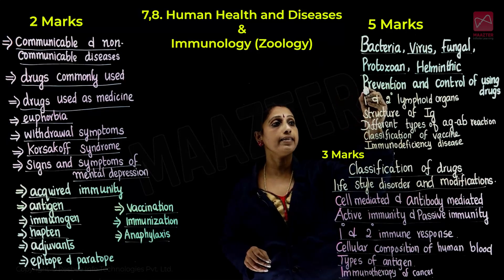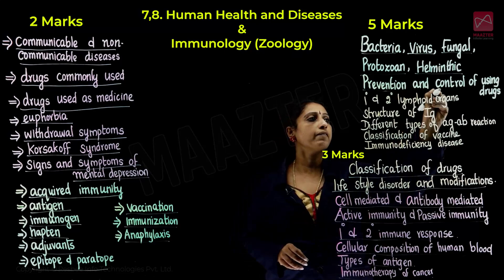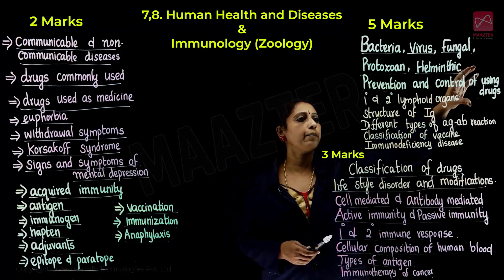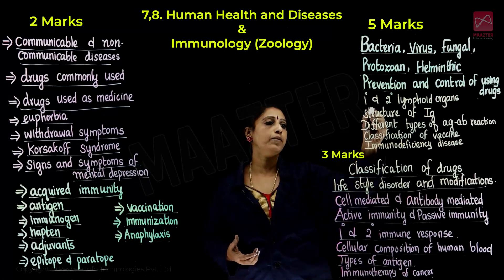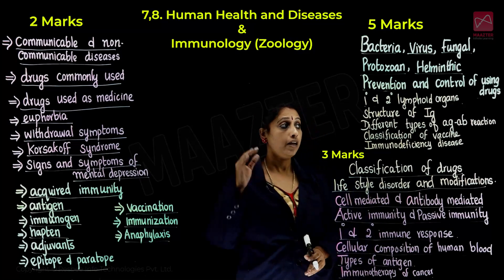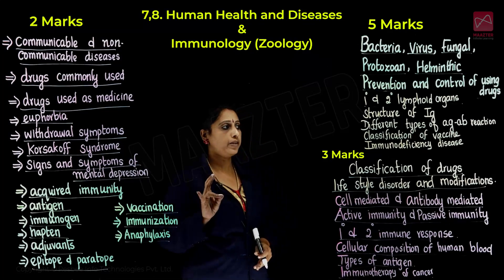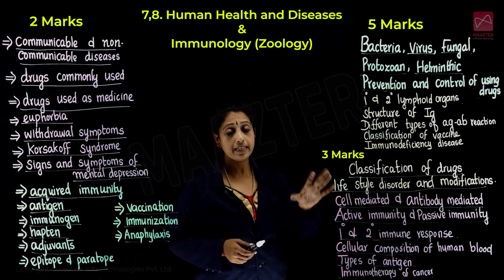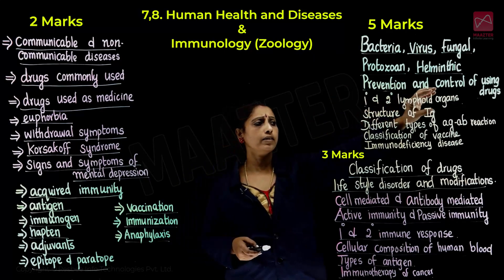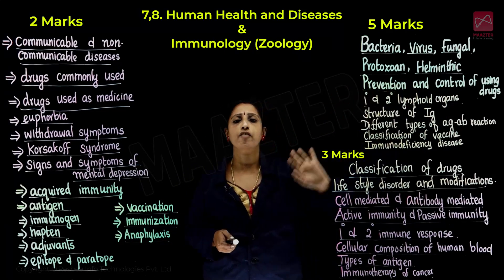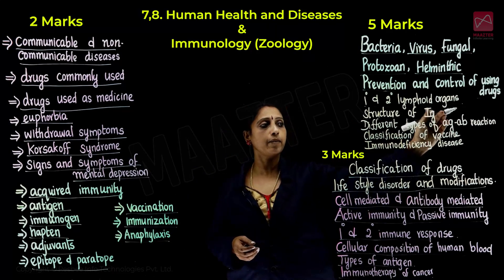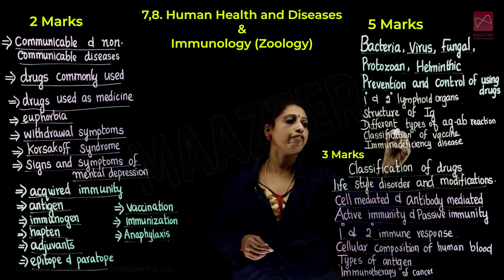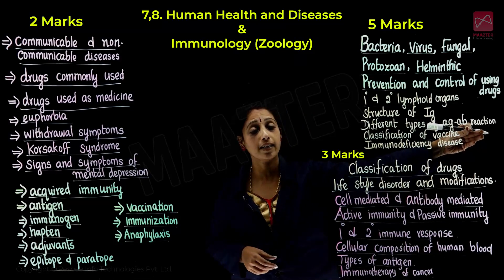There is a very important section on prevention and control of using drugs. In the immunology section, primary and secondary lymphoid organs are important — thymus, Bursa of Fabricius, and bone marrow are primary lymphoid organs; secondary lymph nodes and Peyer's patches are also there. You will find the structure of immunoglobulin — the diagram is a very important question. Different types of antigen-antibody reactions and classification of vaccines are also important questions.